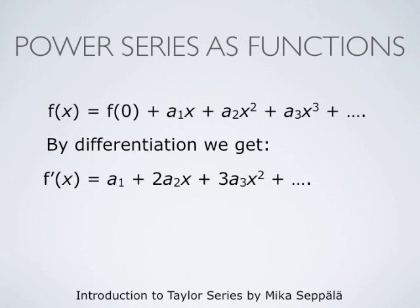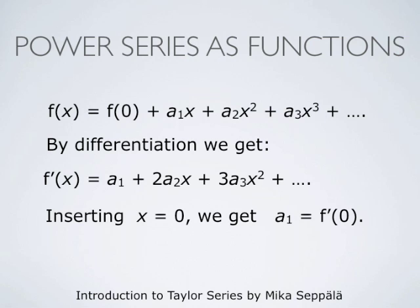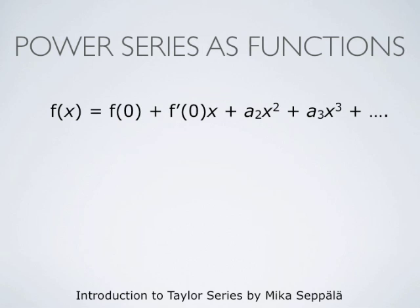The derivative of a2 times x squared is 2 times a2 times x. The derivative of a3 times x cubed is 3 times a3 times x squared, and then it continues. So the derivative of f is a1 plus 2 times a2 times x plus 3 times a3 times x squared and so forth. Inserting x equals 0, we get that a1 equals the derivative of f at 0. So the power series is f at x equals f at 0 plus f prime at 0 times x plus a2 times x squared plus a3 times x cubed and so forth.